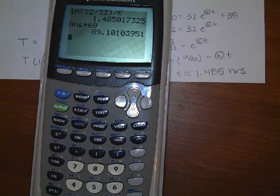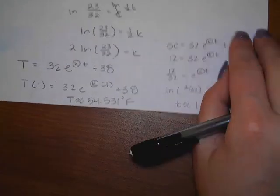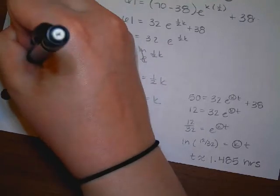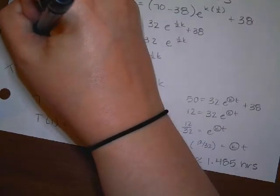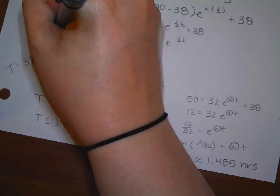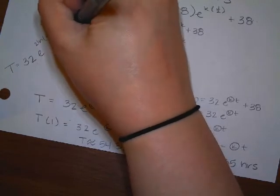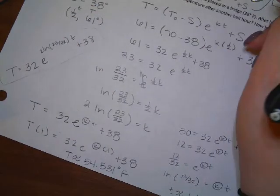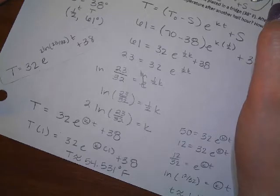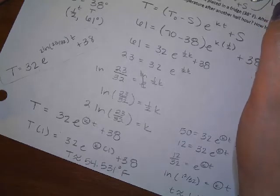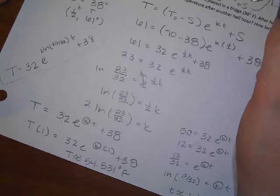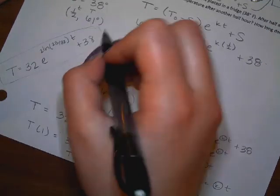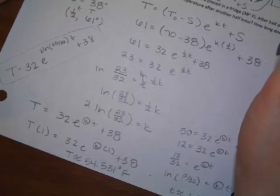So if they said something like, what equation are you using in this problem? I would say the equation that I used in this problem is 32 e to the 2 ln(23/32) times t plus 38. If they wanted to know what equation did you use to solve this problem, this is what I would say. I would have the K plugged in there with all that nastiness. But if you don't want to write that for every step of the problem, I understand, because that's a lot to write for K every single time.